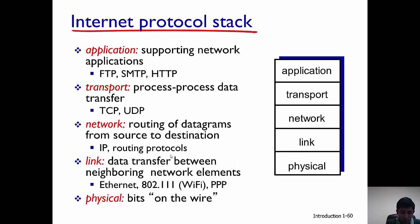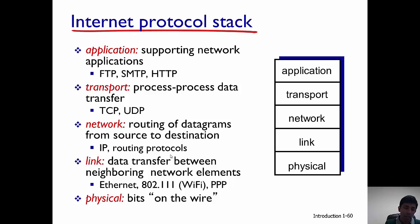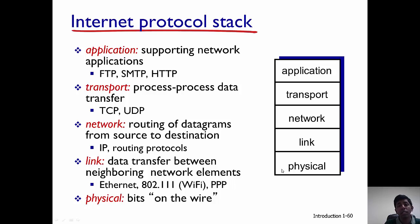So what are the layers of networking, or the internet protocol stack to be precise? There are five layers. The first layer is called the application layer, the second is the transport layer, then the network layer, followed by the link layer, and then the physical layer. I'm taking a top-down approach, so the application layer is on top and the physical layer is at the very bottom. The application layer supports different kinds of network applications.